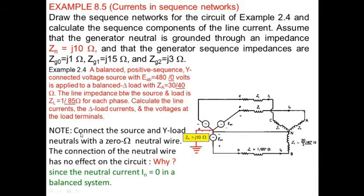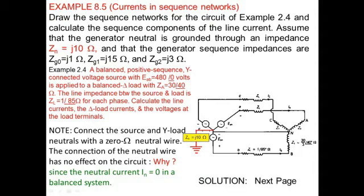Note that if we connect the source and the Y-node neutral point with zero impedance, there will be no effect because IN equals zero. For the zero sequence network, the current I0 is equal to zero. The line impedance is 1 at angle 85 degrees, ZJ0 is J1, 3·Zn is J30, and the delta divided by 3 gives 10.